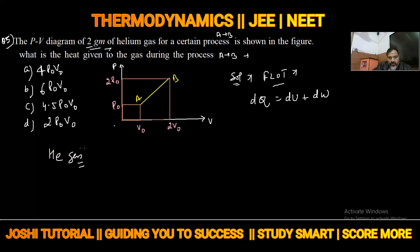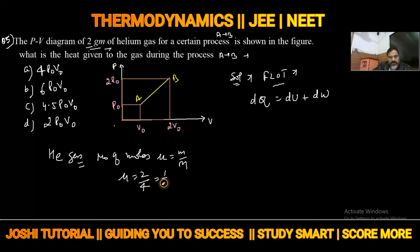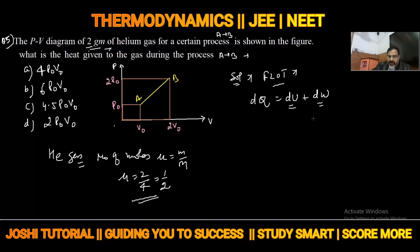The mass given is 2 grams, so number of moles mu = given mass / molar mass = 2/4 = 0.5. We can use this in the problem if needed. Now we need to solve DU and DW (work done) separately.